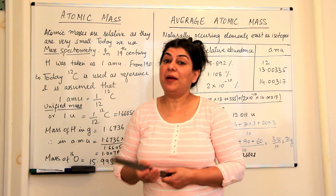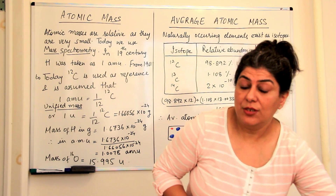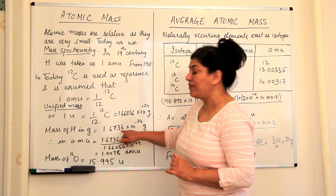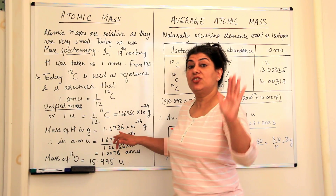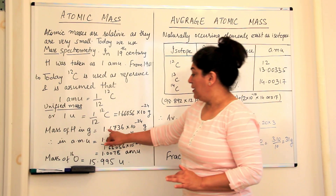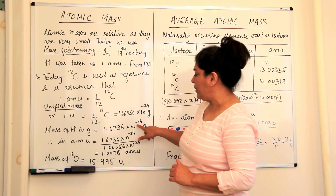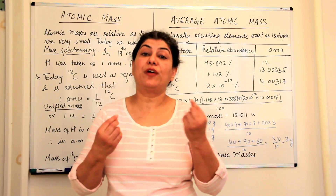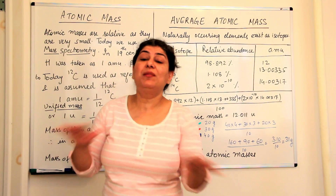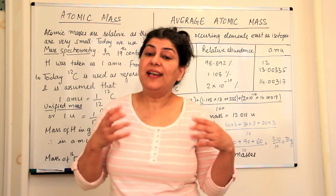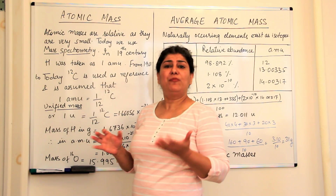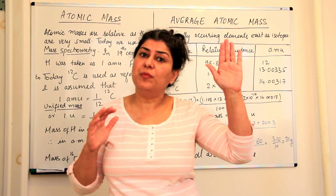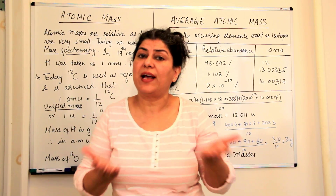The reverse can also happen. When we have atoms, do you know that one atom of hydrogen weighs 1.6736 × 10⁻²⁴ grams — which means 0.000 with 23 zeros followed by 16736. That is the mass of one atom of hydrogen, which is extremely small, ridiculously small, and hence using the unit of grams for atoms is actually impractical.